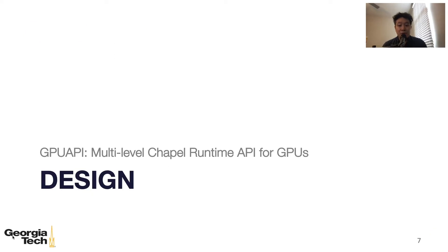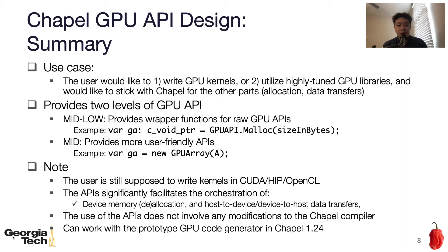Now I'll talk about our design of the medium-level GPU API for Chapel. At the medium-low level, we assume the scenario where the user would like to write a GPU kernel or utilize highly-tuned GPU libraries and would like to stick with Chapel for the other parts. On the other hand, the medium-level is a bit more Chapel programmer-friendly. For example, the user can allocate a GPU array by using the 'new' keyword. We believe that this API design significantly facilitates the orchestration of low-level GPU API. It's worth noting that the use of the API does not involve any modification to the Chapel compiler.